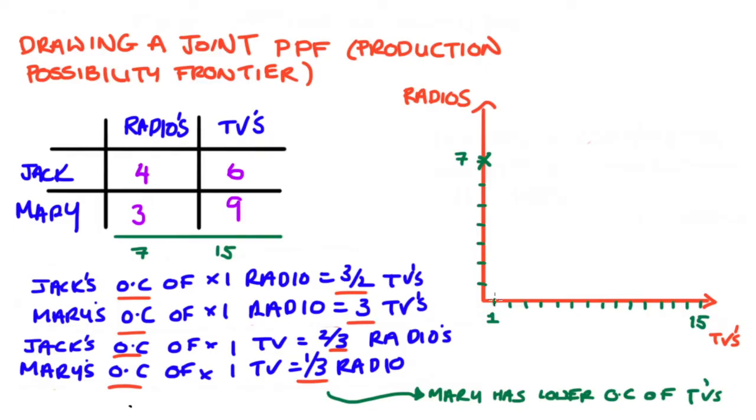We can ask ourselves the next question for the second TV, who would we get to make it? Well, again, it would be Mary because she has the lower opportunity cost. And we keep on asking ourselves that question. The third, the fourth, the fifth, the sixth, the seventh, the eighth, the ninth, and the tenth TV, we ask who is going to make it. Now, the key here is that Mary can only herself make nine TVs. So Mary will make the first nine TVs because she has the lower opportunity cost, but she cannot make the tenth TV. She does not have that productive capacity to make more than nine TVs.